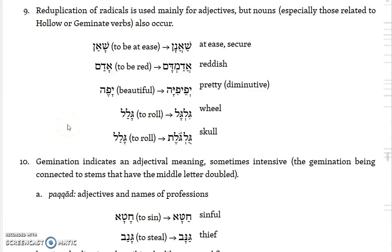Reduplication of radicals is used mainly for adjectives, but nouns — especially those related to hollow or geminate roots — also occur. So sha'an, 'to be at ease,' forms the noun sha'anan, meaning 'at ease' or 'secure.' Adam, 'to be red,' gives admadam — reduplicating the dalet and mem — meaning 'reddish.' Yifeh is 'beautiful,' but yifiyah is 'pretty,' a diminutive. Galal, 'to roll,' is related to Gilgal, meaning 'a wheel,' and also to the city Gilgal, as well as to gulgolet, meaning 'a head' — which rolls if chopped off.